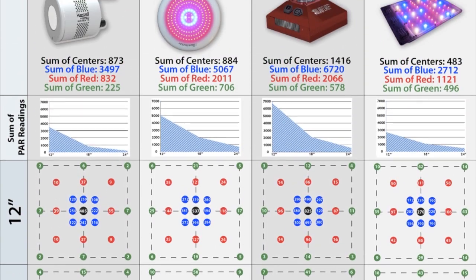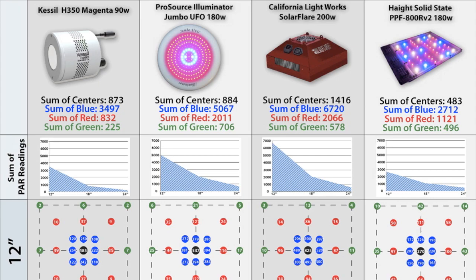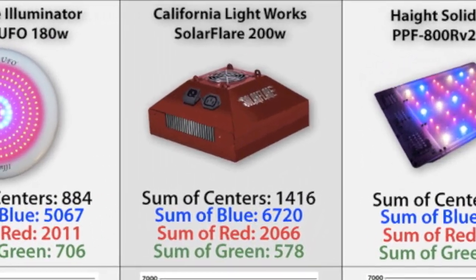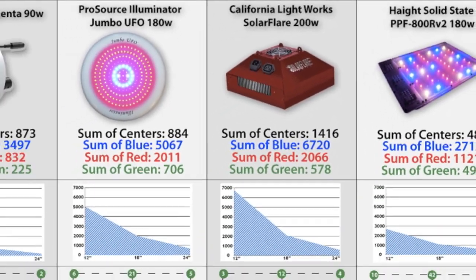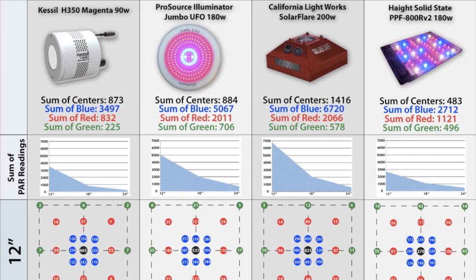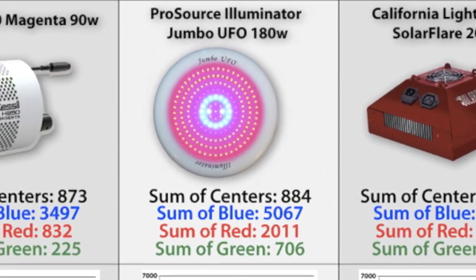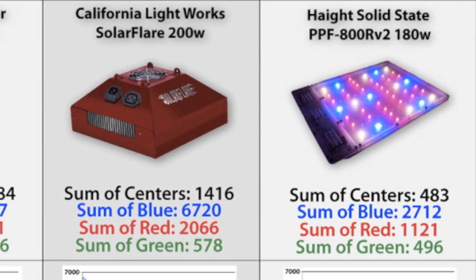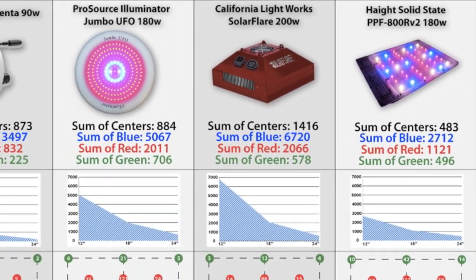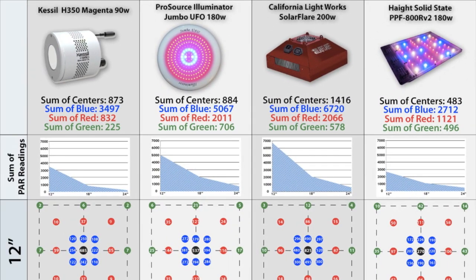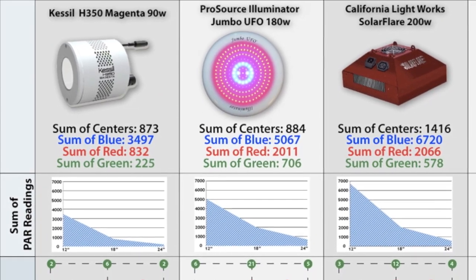It seems like the light that came out best was the California Lightworks, giving us some of the highest PAR readings out of all these lights. It also covered a pretty good area, although we did see once you get up a little bit higher that the ProSource and the Haze Solid State did make up a little bit of ground on the California Lightworks unit when you're talking about 18 inches up or 24 inches up in those two foot and three foot squares.